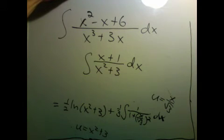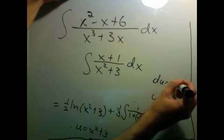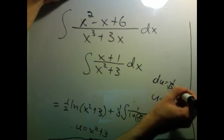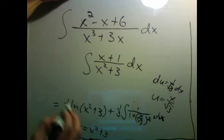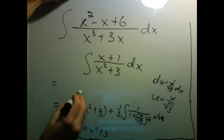u equals x over root 3. In that case, du is 1 over root 3 dx. So I still have that there.